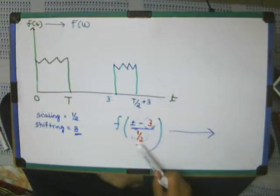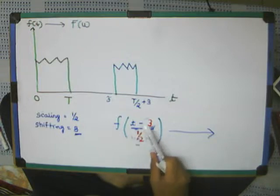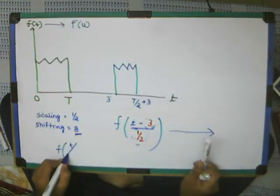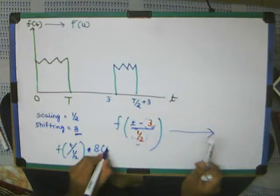So now, this scaling function, 1 by 2, will correspond, first of all, this I can write also as, F of T divided by 1 by 2, convolved with delta of T minus 3.